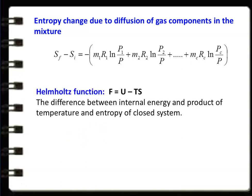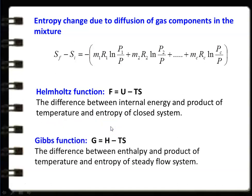The Helmholtz function is F = U − TS, which is the difference between internal energy and the product of temperature and entropy for a closed system. The Gibbs function is G = H − TS, which is the difference between enthalpy and the product of temperature and entropy for a steady flow system. Both the Helmholtz and Gibbs functions represent the free energy of the system, and are important for calculating the free or available energy of the components.